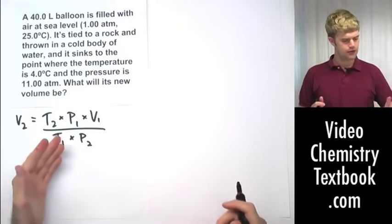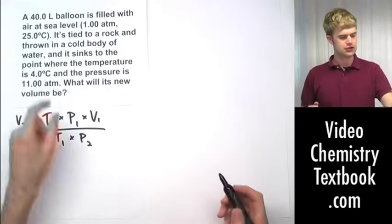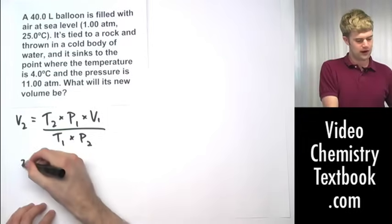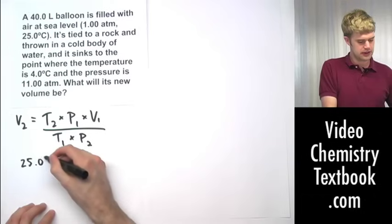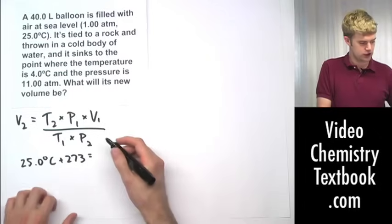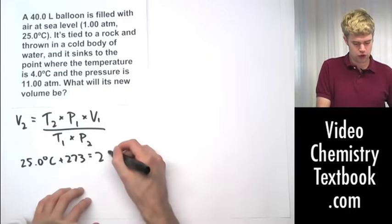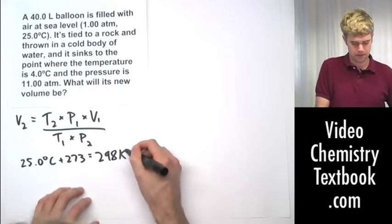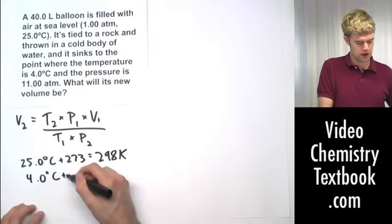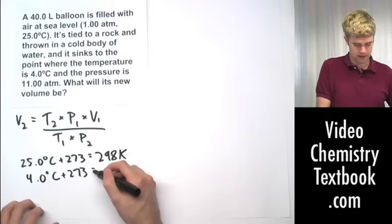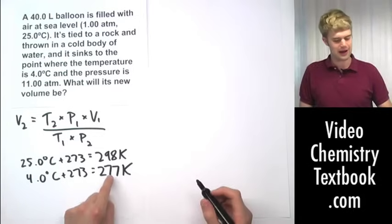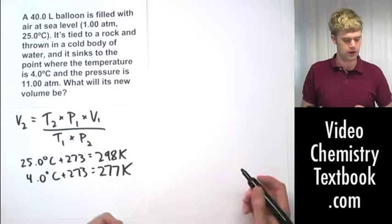Let's go about solving this. The first thing I'm going to want to do is take these two Celsius temperatures and convert them to Kelvins. So I have 25.0 degrees Celsius plus 273 is going to give me 298 Kelvin. And the other temperature that I have to convert is 4.0 degrees Celsius plus 273 and that's going to give me 277 Kelvin. So now that I have these temperatures in the right units to solve for the equation, let's go ahead and put these variables in.